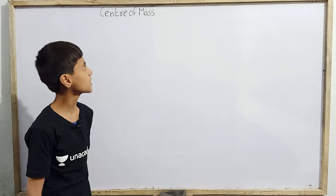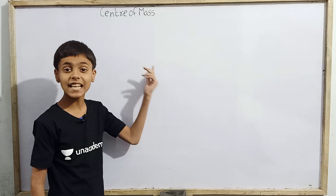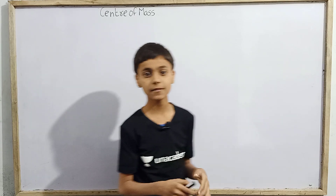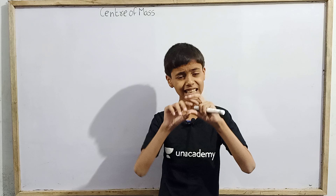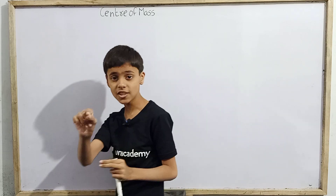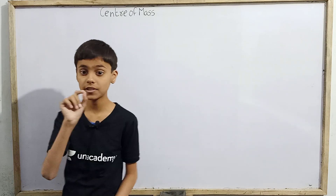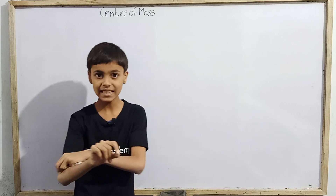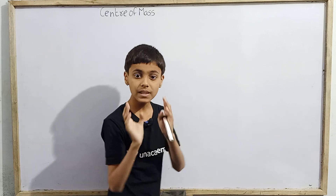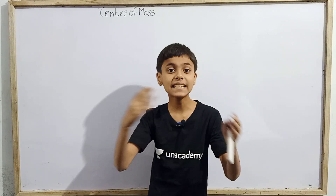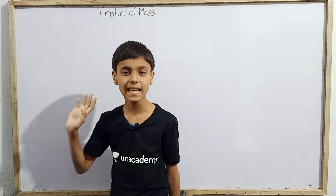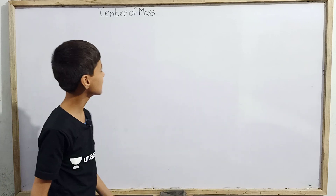First of all, what is center of mass? We can define it as: in any system of particles, there will be such a point on which the mass — generally the total mass — will be equal to the entire mass of this system.